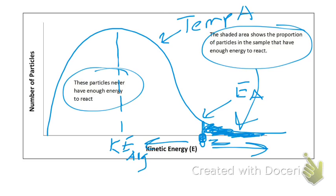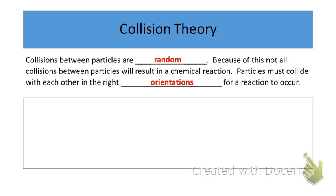Now let's turn to the geometry of collisions — the orientations molecules must be in. Collisions between particles are random, and because of this not all collisions result in a chemical reaction. Particles must collide in the right orientation, the right geometrical spot, for the reaction to occur. The easier it is for them to collide in the right location, the faster the reaction will occur.